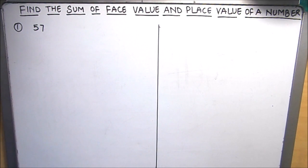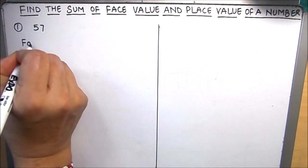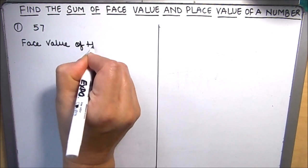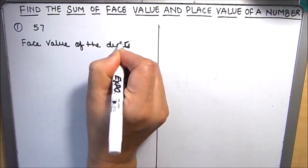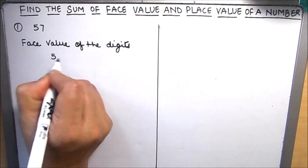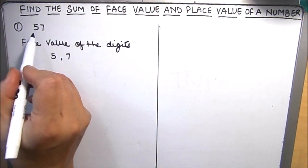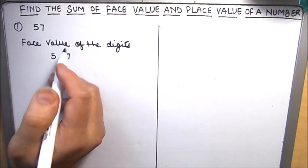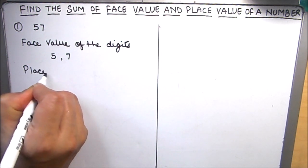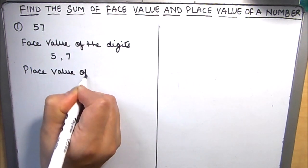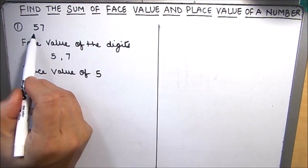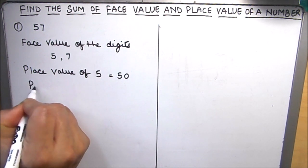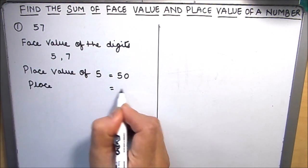First we will write the face value. Face value of the digits is 5 and 7 — face value of 5 is 5 and face value of 7 is 7. Now we will write the place value of the two digits. Place value of 5, as it is in the 10's place, is 50, and place value of 7, as it is in the 1's place, is 7.